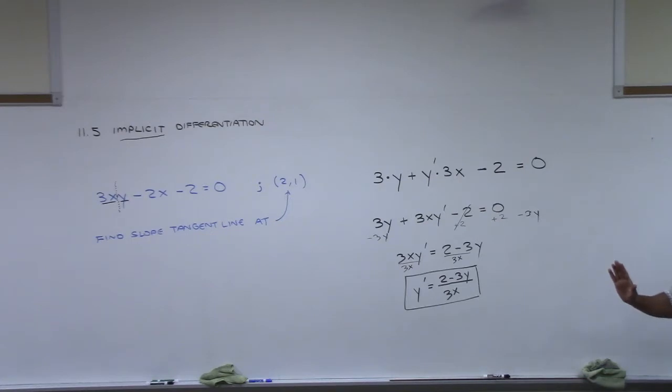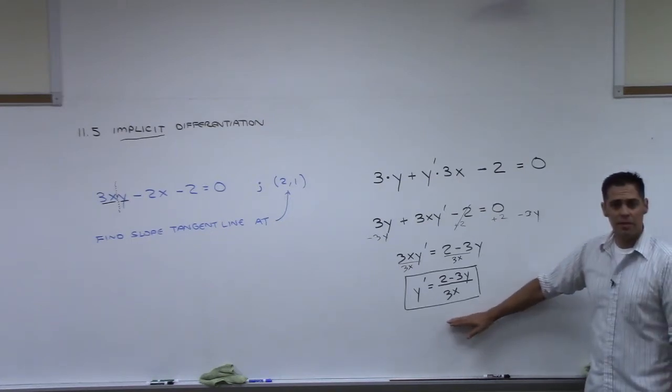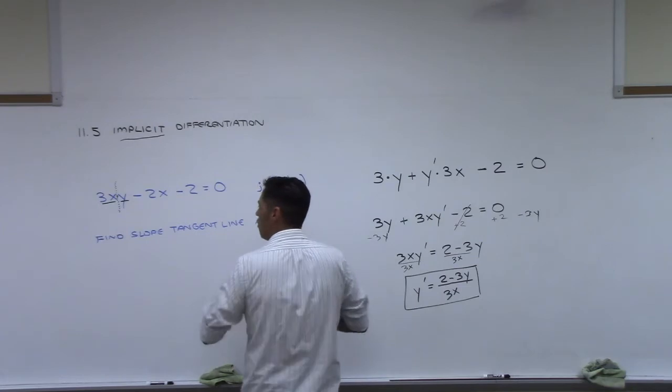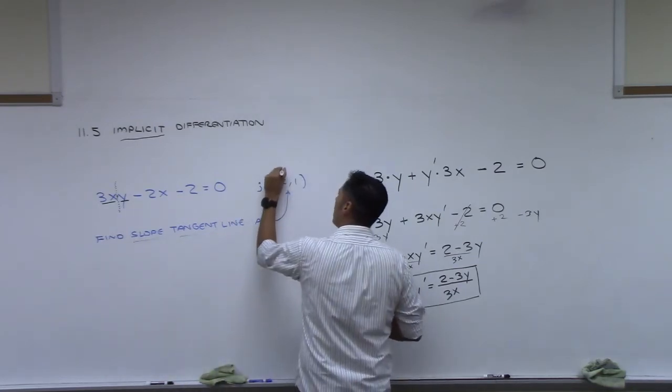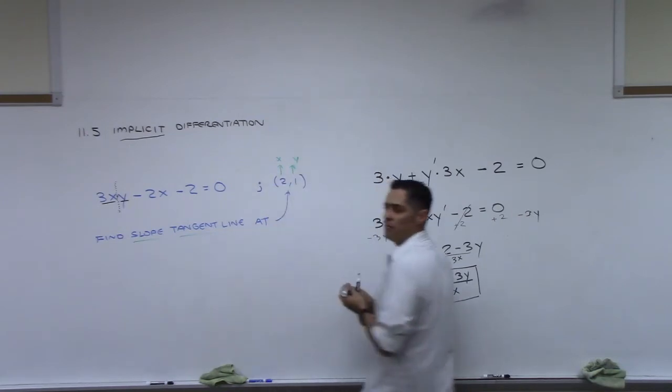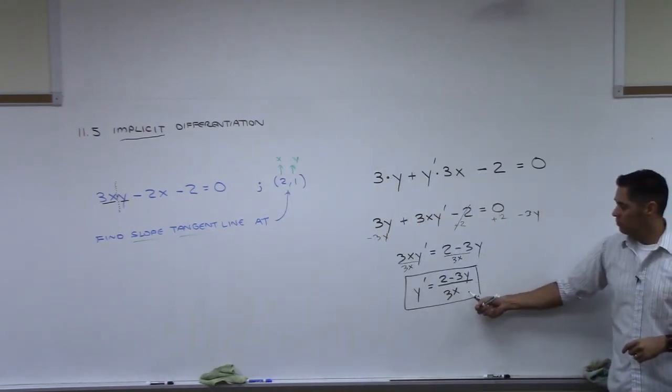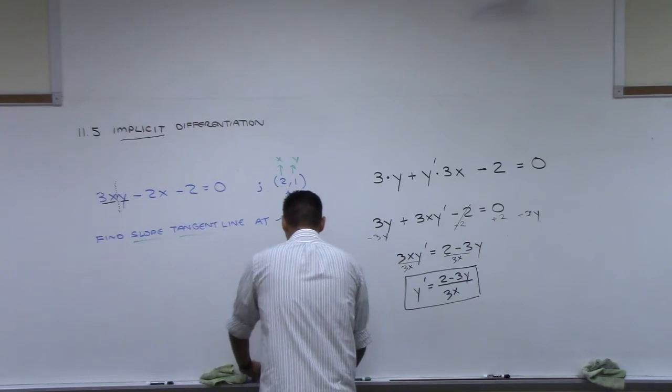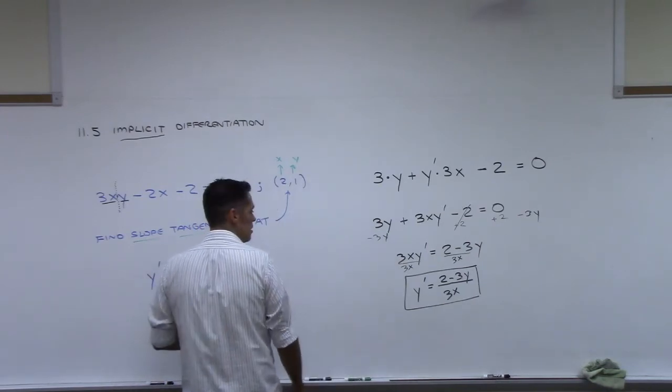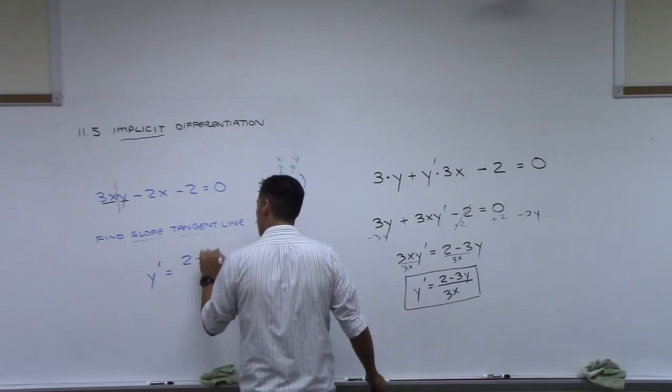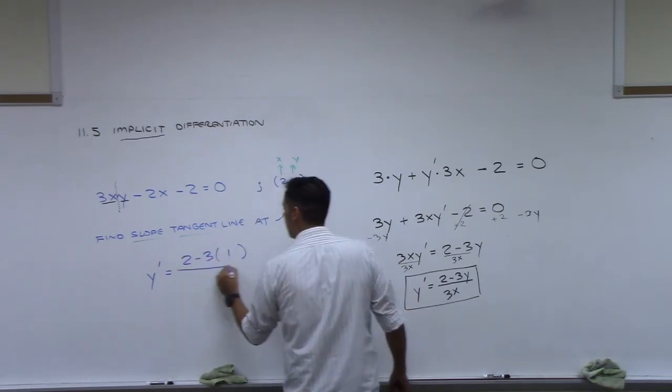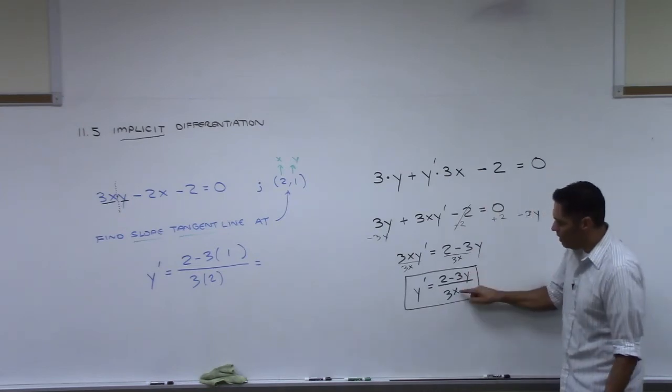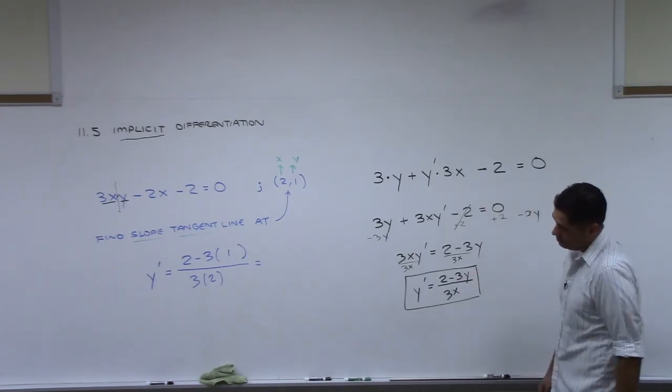Now, we're not done. That's not the answer. We still need to figure out what the slope of the tangent line is at this particular point. So that's our x, and that's our y coordinate. So we're just going to take those and plug them in right here, for x and for y. So the answer to the question, the slope of the tangent line, is that y prime equals 2 minus 3 times 1, and then over 3 times 2. So just replacing that y with 1 and that x with 2, and you get negative 1 sixth.